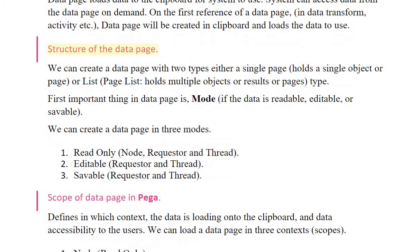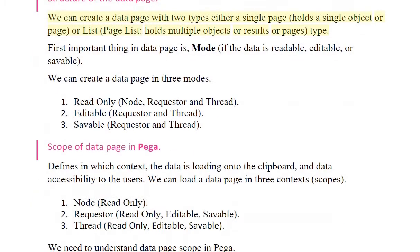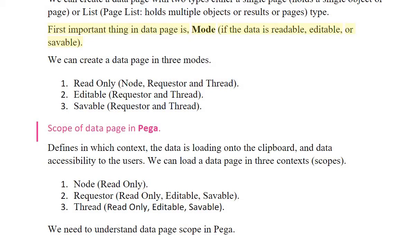Structure of the data page: We can create a data page with two types — either a single page, which holds a single object or page, or a list (page list), which holds multiple objects, results, or pages. The first important thing in a data page is the mode: whether the data is readable, editable, or saveable.